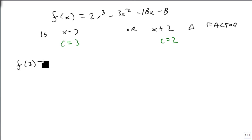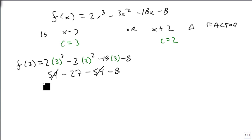And we're going to find f(3), 2 times 3 cubed minus 3 times 3 squared minus 18 times 3 minus 8. So 3 cubed is 27, 27 times 2 is 54. 3 squared is 9 times 3 is 27. 18 times 3 is 54 minus 8. So the 54s eliminate. Minus 27 minus 8 is minus 35.